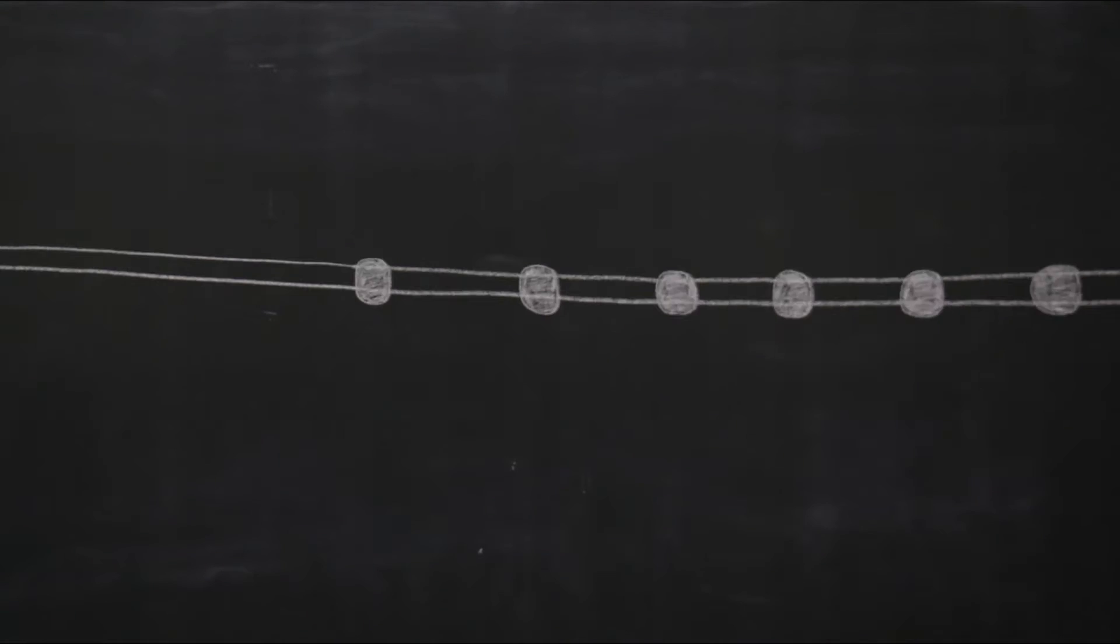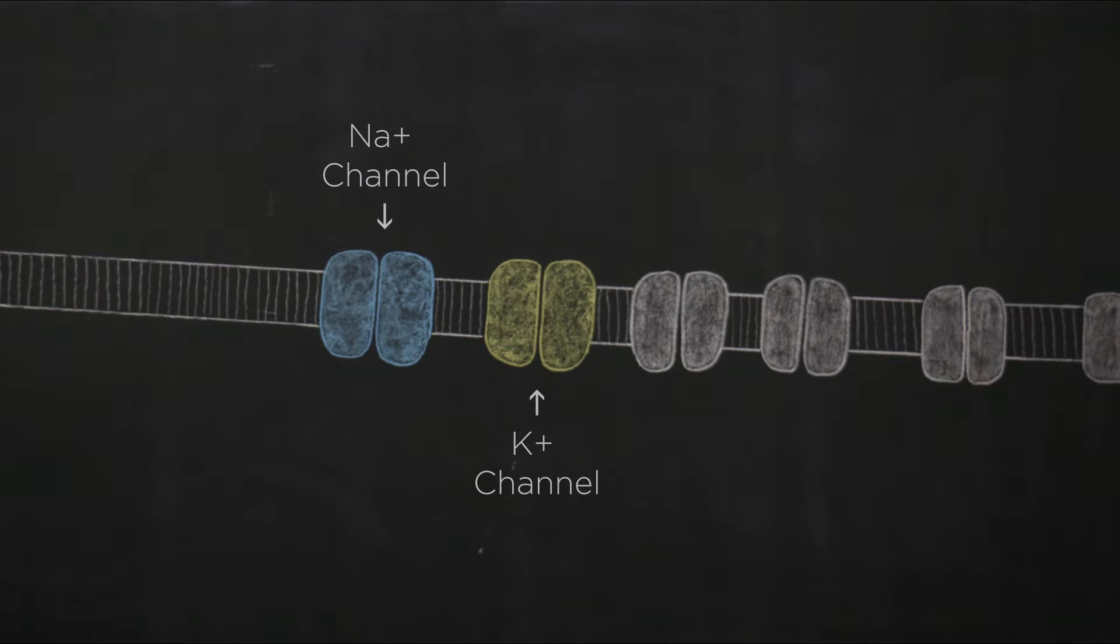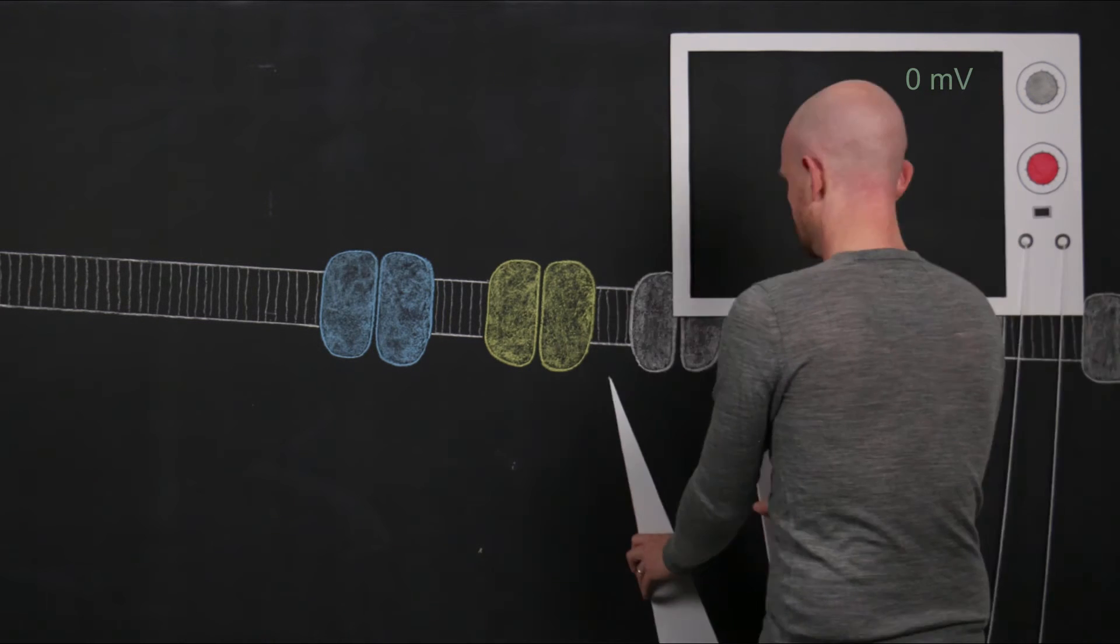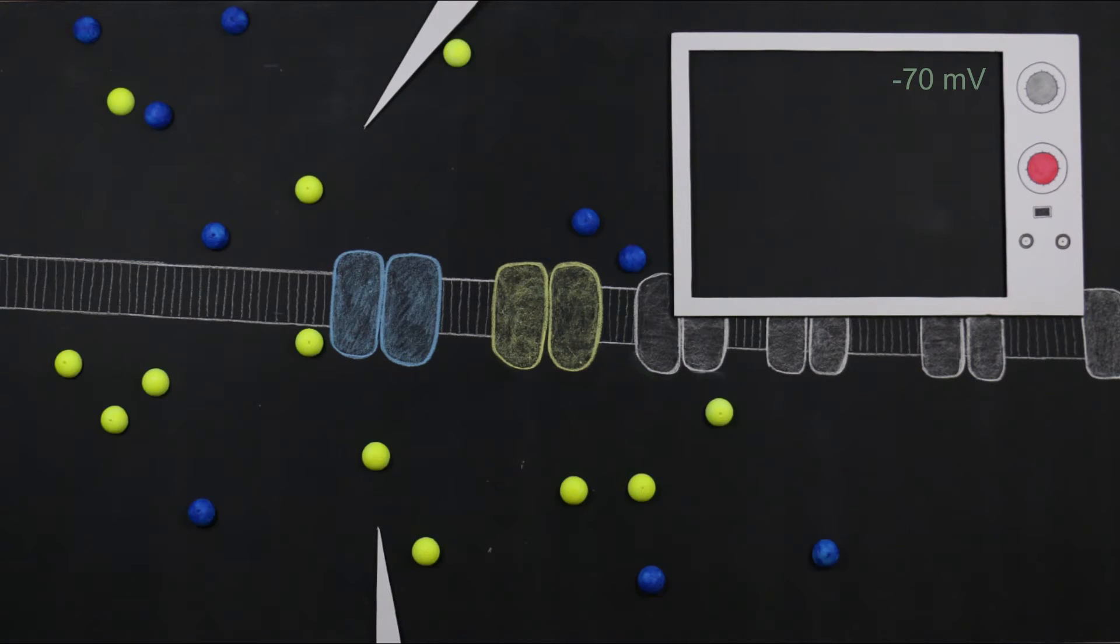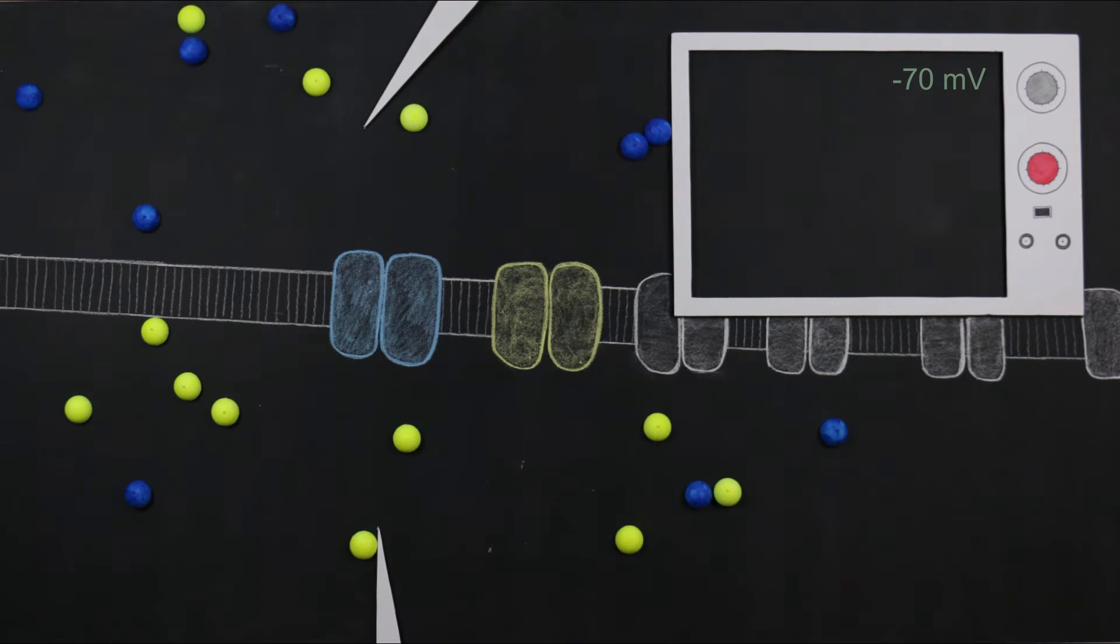Recall that the membrane potential of a neuron at rest is relatively constant despite the high pressure acting to drive sodium ions into the cell. This is because the resting membrane is relatively impermeable to sodium.